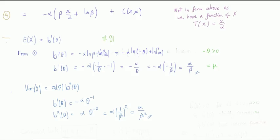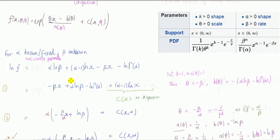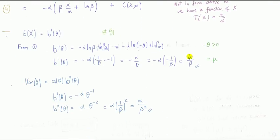For the variance, we'll show this is the relationship with the b function: take the first derivative of b with respect to theta and differentiate that again. Going through the same process, you can see the variance is alpha over beta squared. Looking at this gamma, the support is non-negative numbers and both parameters are constrained to be positive, so the mean of x will be positive and the variance is positive.